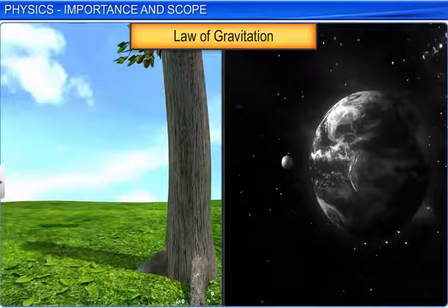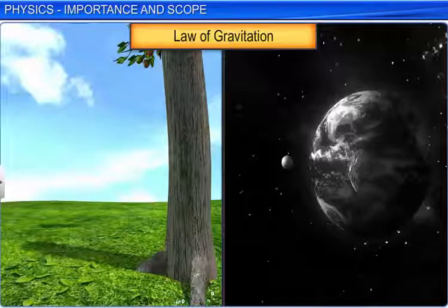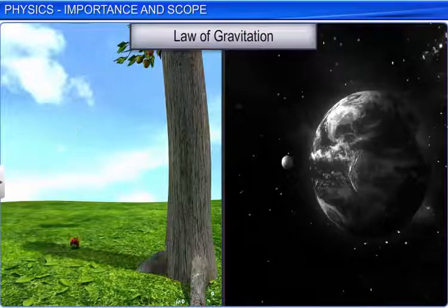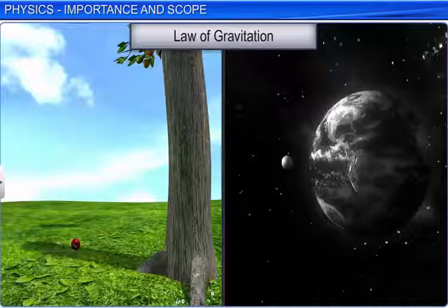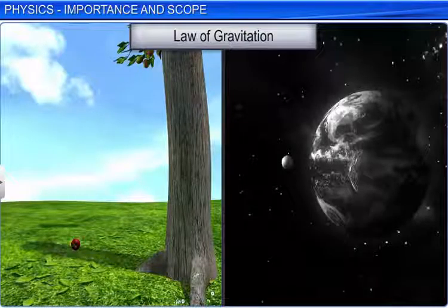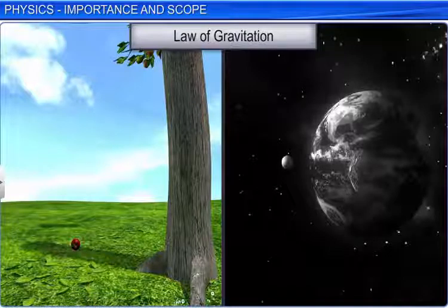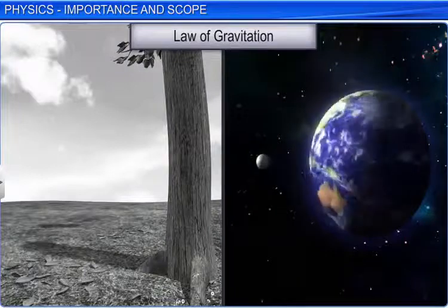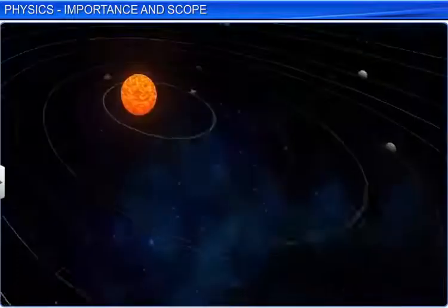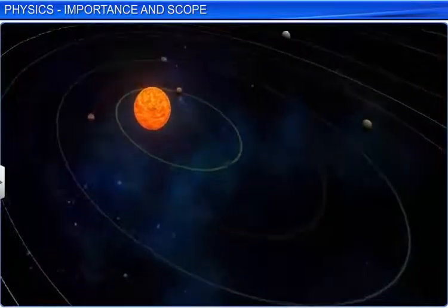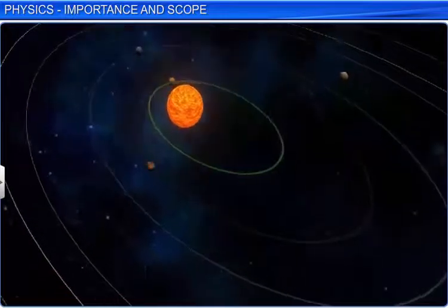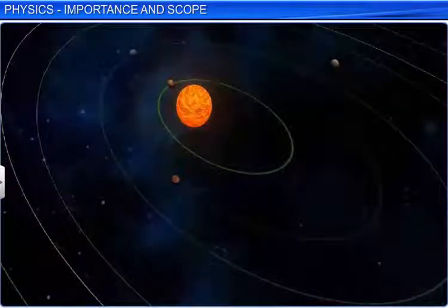For example, the law of gravitation, which describes the motion of an apple detached from a tree, which eventually falls to the earth, also explains the nature of the forces between earth and the moon, and also the force that bounds the planets in the solar system in their orbits and keep them in motion in their paths.